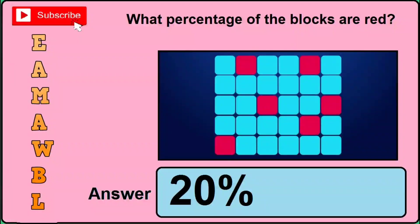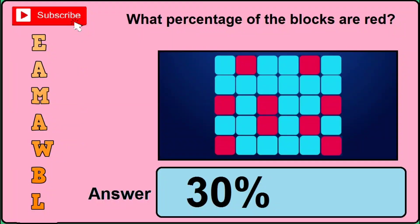In version 2 of this question, watch the image — you can see it is different from version 1 — therefore the correct answer will be 20 percent, so just click 20 percent if you find this set of image. In version 3, watch the image and if you find this set of same-to-same image, the correct answer will be 30 percent, so just click 30 percent if you find this set of image.